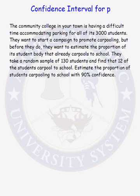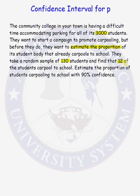In this lesson, we will construct a confidence interval for P, the population proportion. Here's our problem: the community college in your town is having a difficult time accommodating parking for all of its 3,000 students. They want to start a campaign to promote carpooling, but before they do, they want to estimate the proportion of its student body that already carpools to school. They take a random sample of 130 students and find that 12 of the students carpool to school.